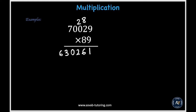Now we're done with the ones digit, so we put a 0 under the 1 and erase the carried numbers to avoid confusion. Now we move on to the tens digit. So 8 times 9 gives us 72; put down the 2 and carry over 7. Then 8 times 2 gives us 16, and 16 plus 7 gives us 23; put down the 3 and carry over 2. Then 8 times 0 gives us 2. Then 8 times 0 gives us 0. Finally, 8 times 7 gives us 56.